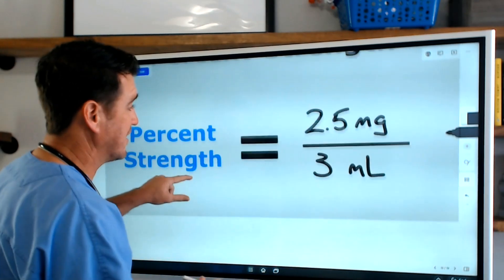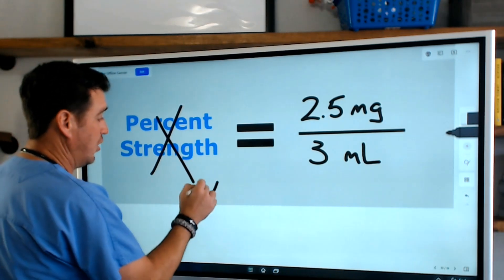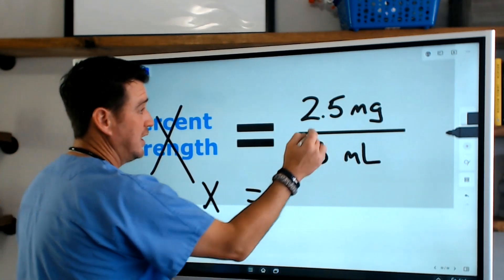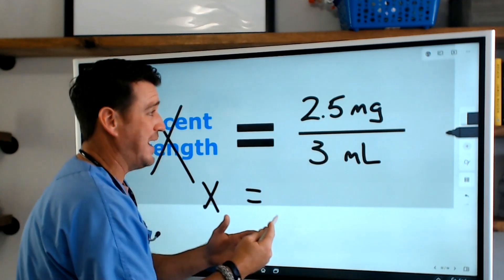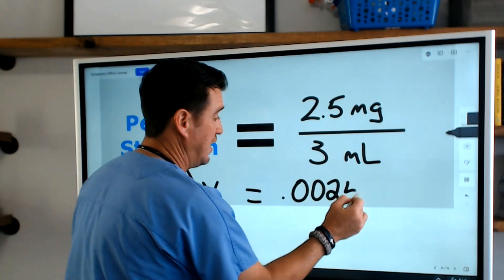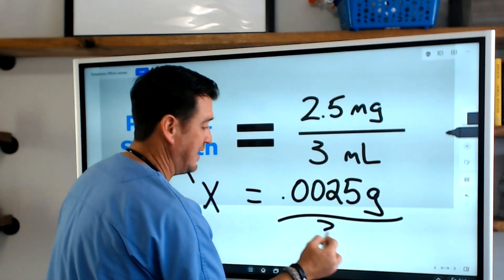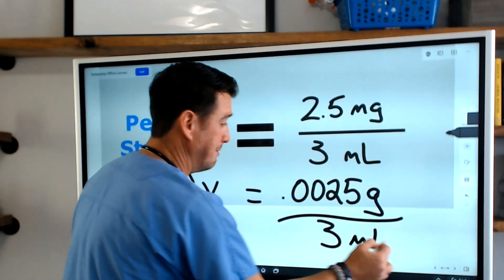So what we're really saying here—this is going to become X, this is what we're solving for—so X equals 2.5 milligrams. If we divide that by a thousand, we'll get 0.0025 grams divided by 3 milliliters.